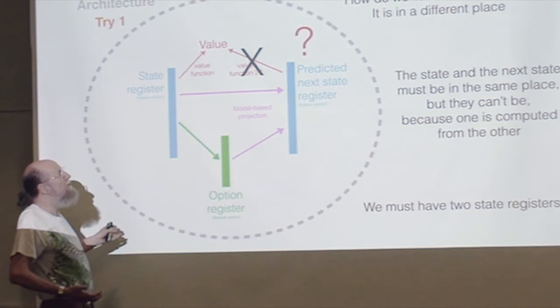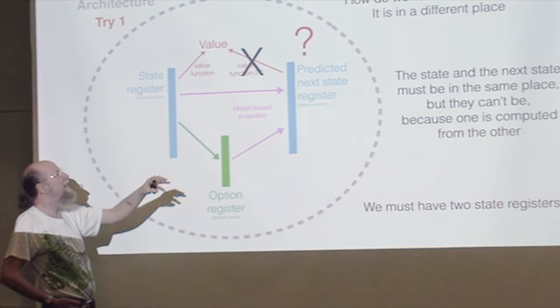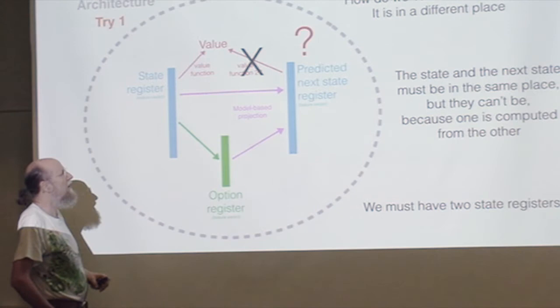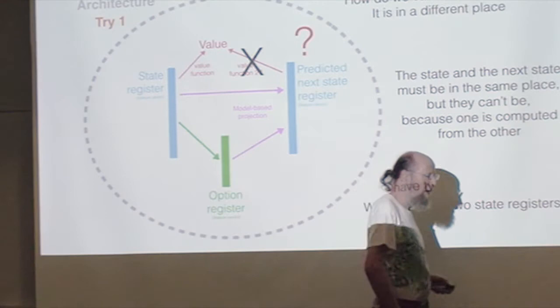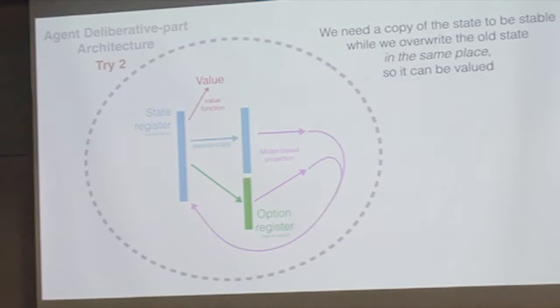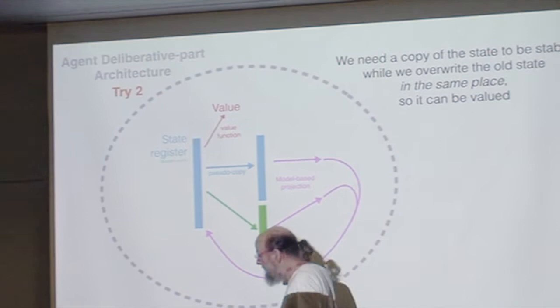In our digital computers, we would just take the pointer that addresses this register and point it at that register. But that's just because we're used to thinking digital symbolic machines. With a real machine, I don't think that would work.